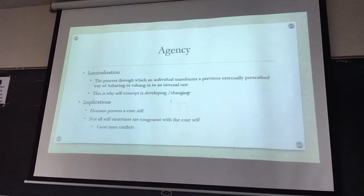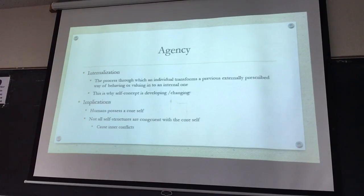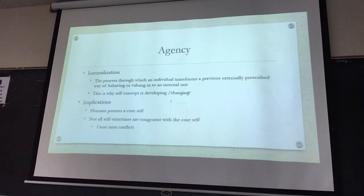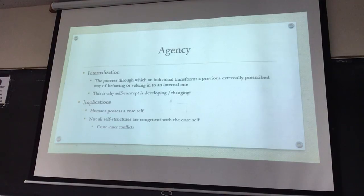If there are self-structures not congruent with the core self, there will be constant inner conflicts. You have to do the data analysis job but you don't want to — you want to be an artist. As a result, you are kind of motivated to do the data analysis job, but your core self tells you to be an artist. The other parts of the self tell you that you have to do the data analysis job because you are in that position and need a salary to support your life. There are sounds from two sources that create a conflict.